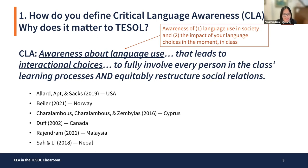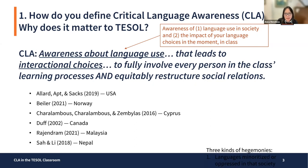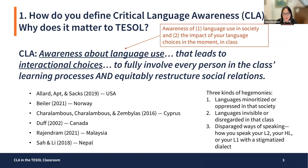In the last study, Sa and Lee looked at a secondary English medium instruction class in Nepal and found that translanguaging to learn was common between Nepali and English. But teachers and students avoided bringing their other first languages to bear on learning, including Gurung, Limbu, and Nwari, which are indigenous, regional, and tribal languages. You can see the common theme running through all these studies: we are seeing three kinds of hegemonies — languages minoritized or oppressed in that society, languages invisible or disregarded in that class, and disparaged ways of speaking.